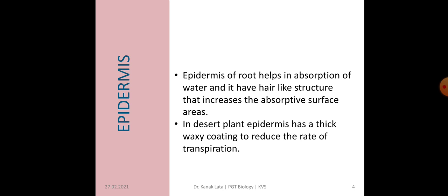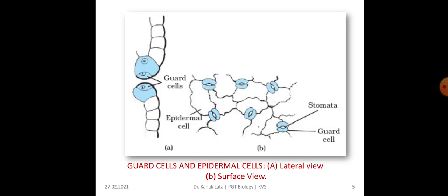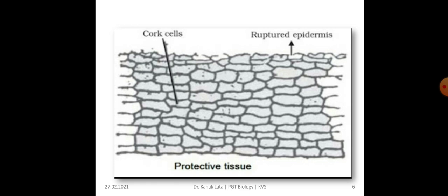In desert plants, epidermis has a thick waxy coating, which also helps in reducing the rate of transpiration, because desert plants are present where there is a scarcity of water. This is the figure of stomata showing guard cells and epidermis cells — A is the lateral view and B is the surface view. This is the protective tissue showing cork cell and ruptured epidermis.